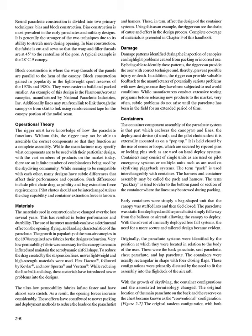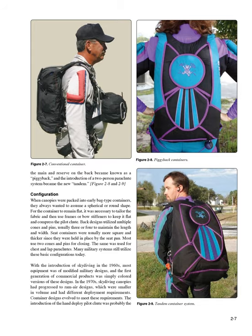The original location of the main parachute on the back and reserve on the chest became known as the conventional configuration. The tandem configuration with both main and reserve on the back became known as a piggyback, and the introduction of a two-person parachute system became the new tandem. When canopies were packed into early bag-type containers, they always wanted to assume a spherical or round shape. To keep the container flat, it was necessary to tailor the fabric and use frames or bow stiffeners, and then use multiple cones and pins—usually three or four—to maintain length and width. Seat containers were usually more square and thicker. Many military systems still utilize these basic configurations today.